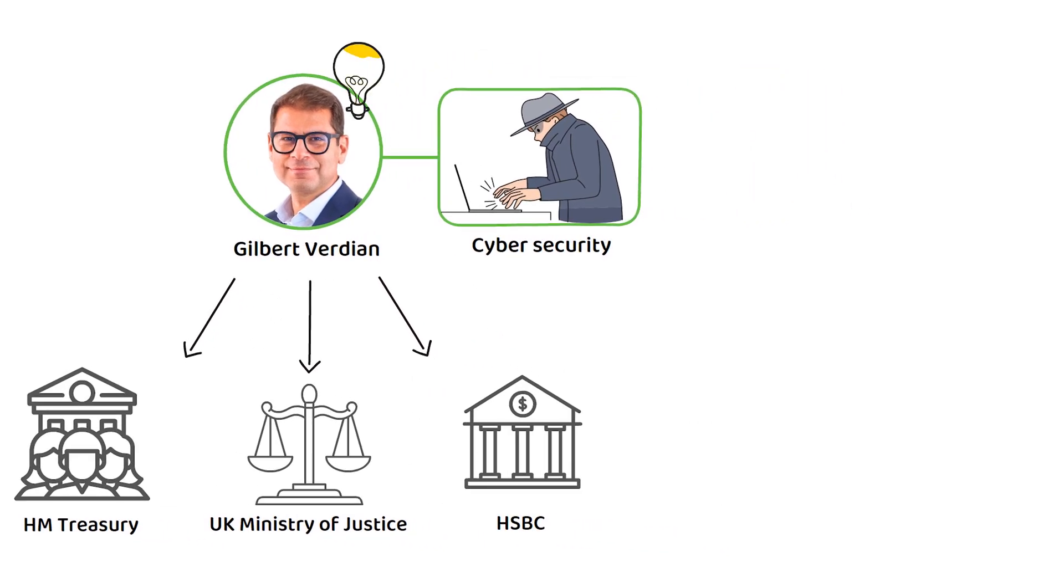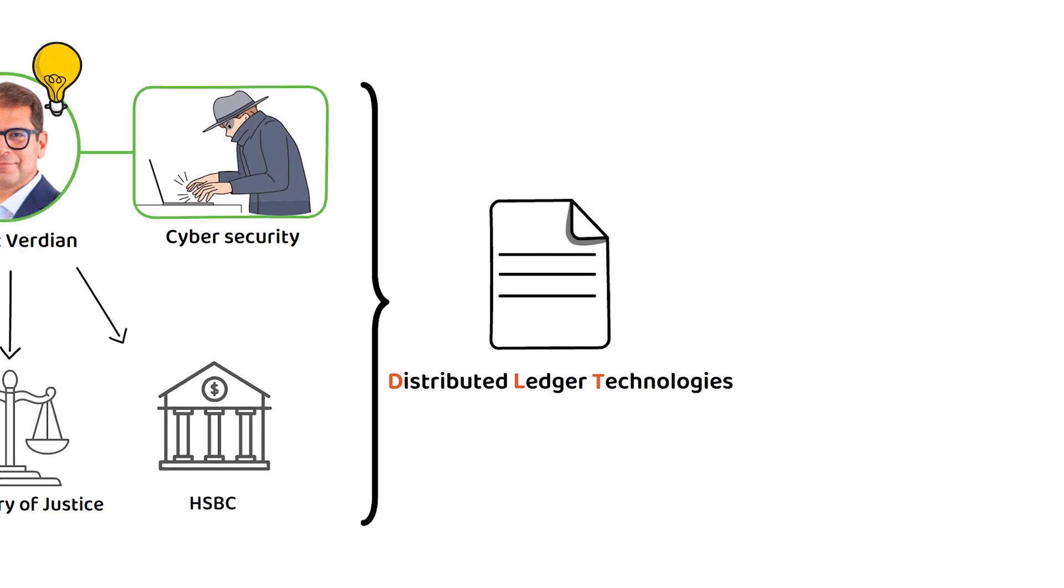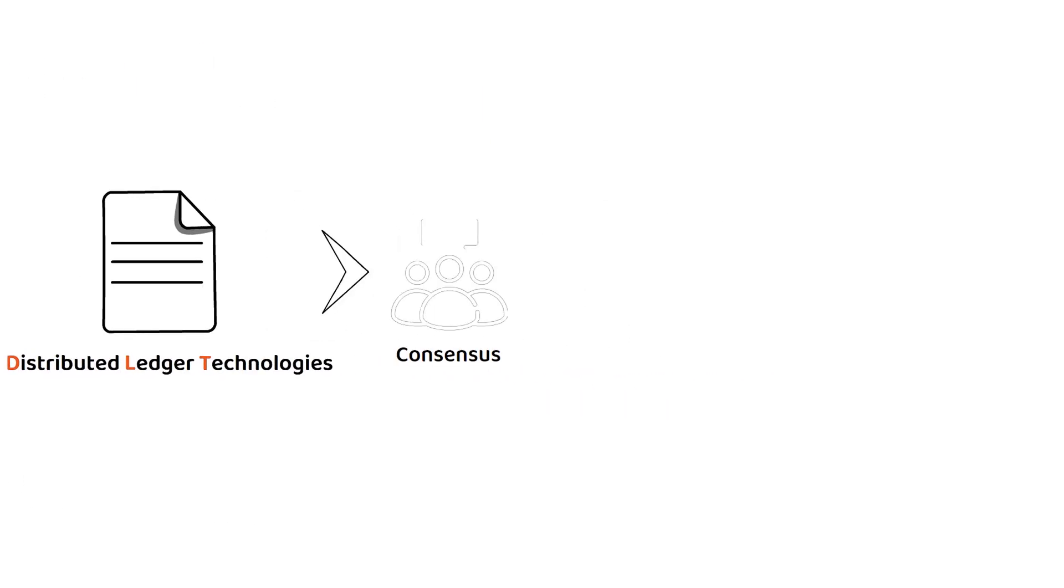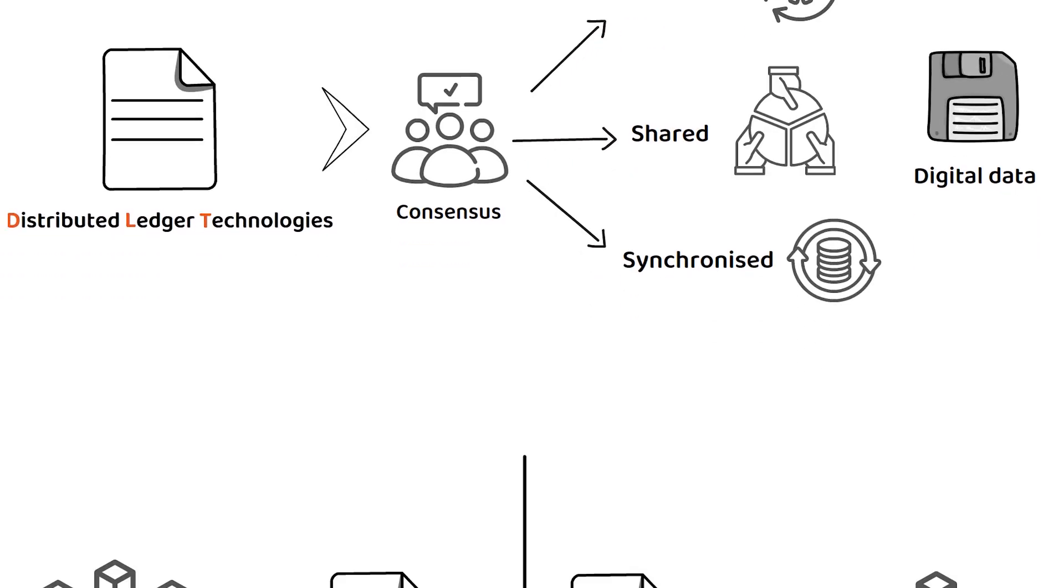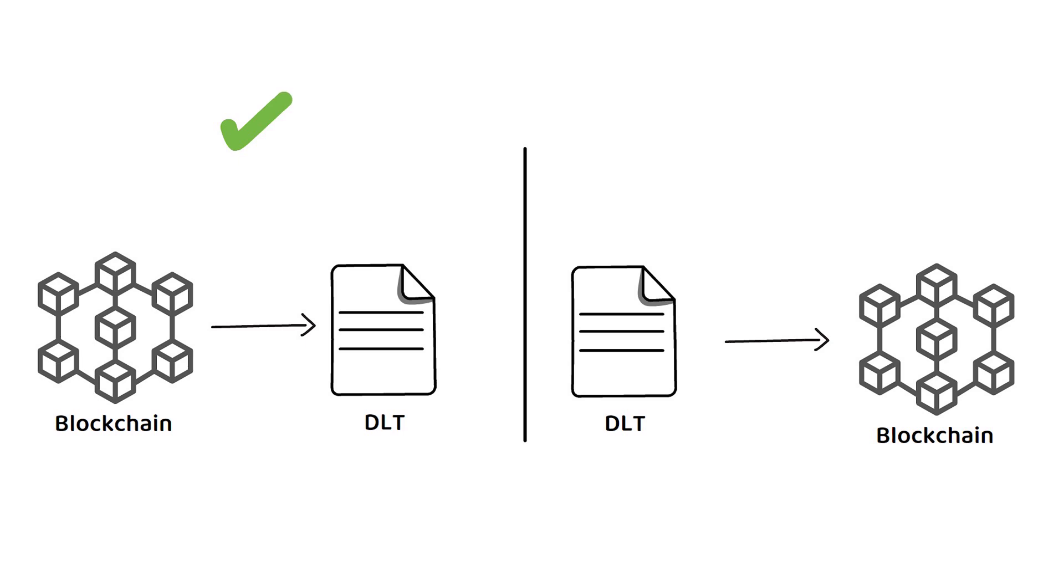It is safe to say he has an extensive career in cyber security, and it was through these roles that Gilbert discovered the potential of distributed ledger technologies, or DLTs. To quickly explain, a DLT is the consensus of replicated, shared, and synchronized digital data. While a blockchain is a DLT, not all DLTs are blockchains. But don't worry, I will expand upon that point shortly.